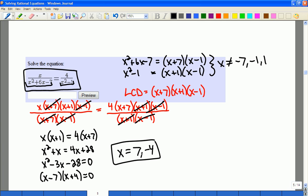So again, if I check, there's no problem. Both of these numbers are permissible values, so they're both solutions to this equation.